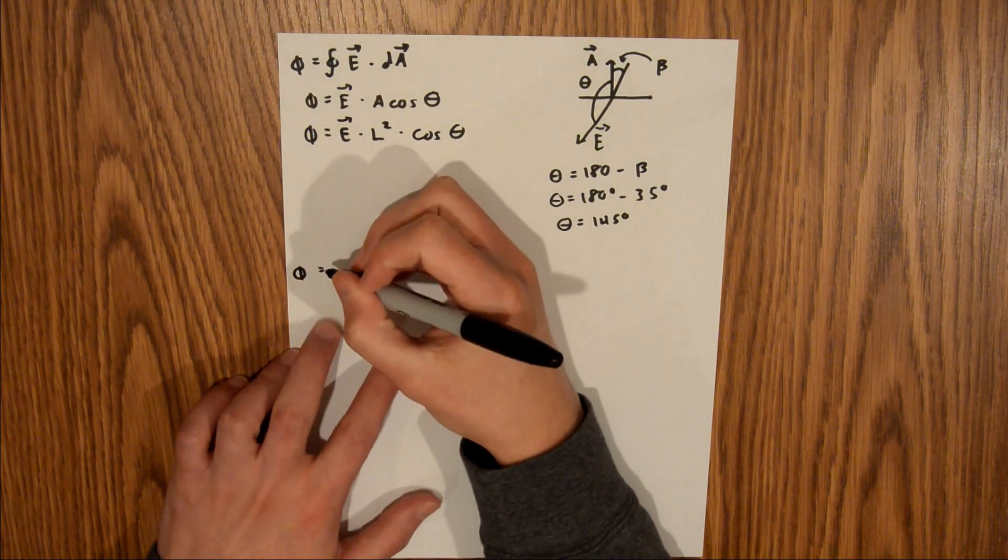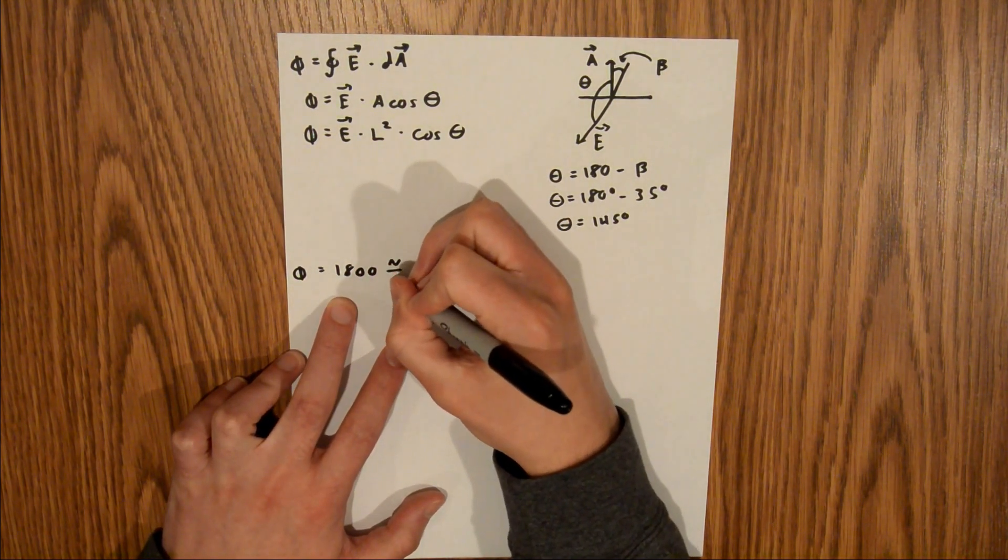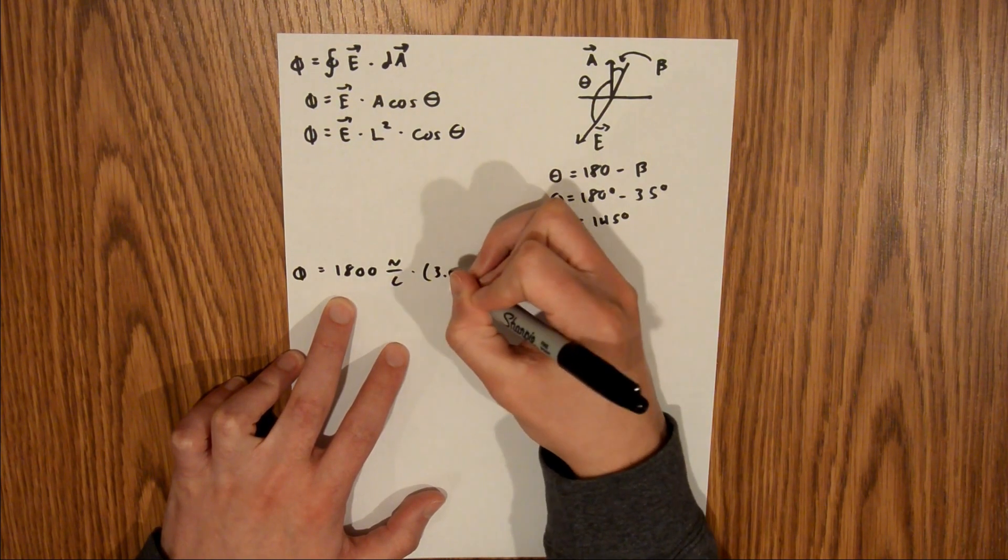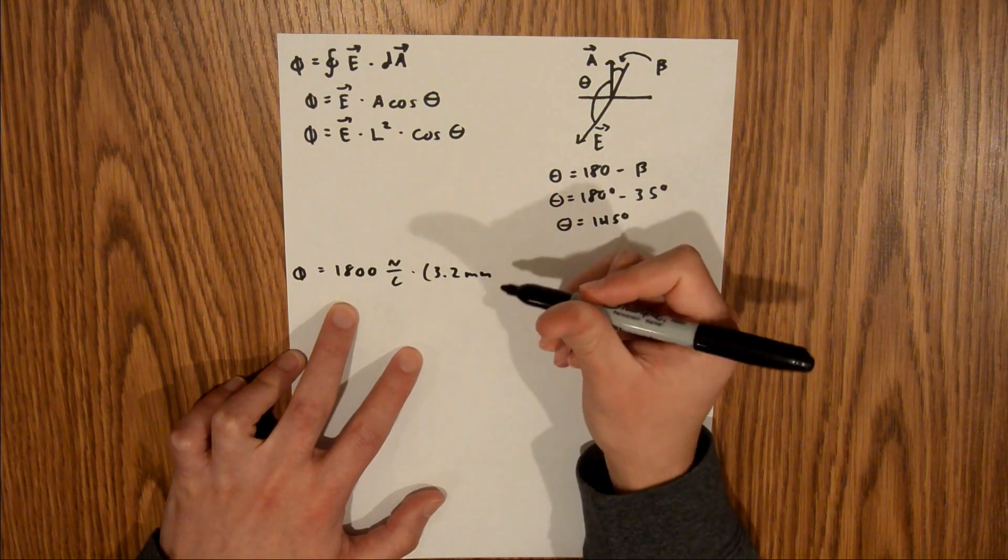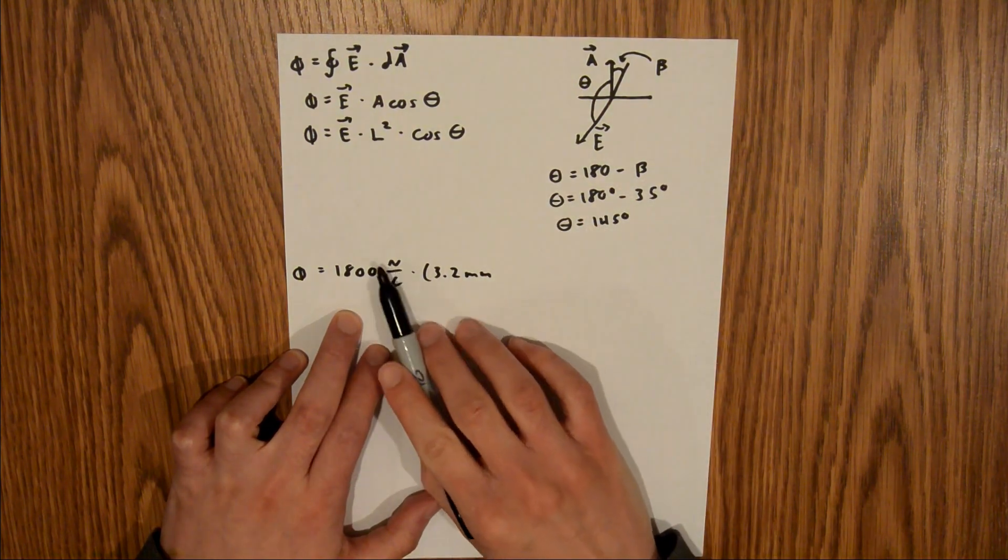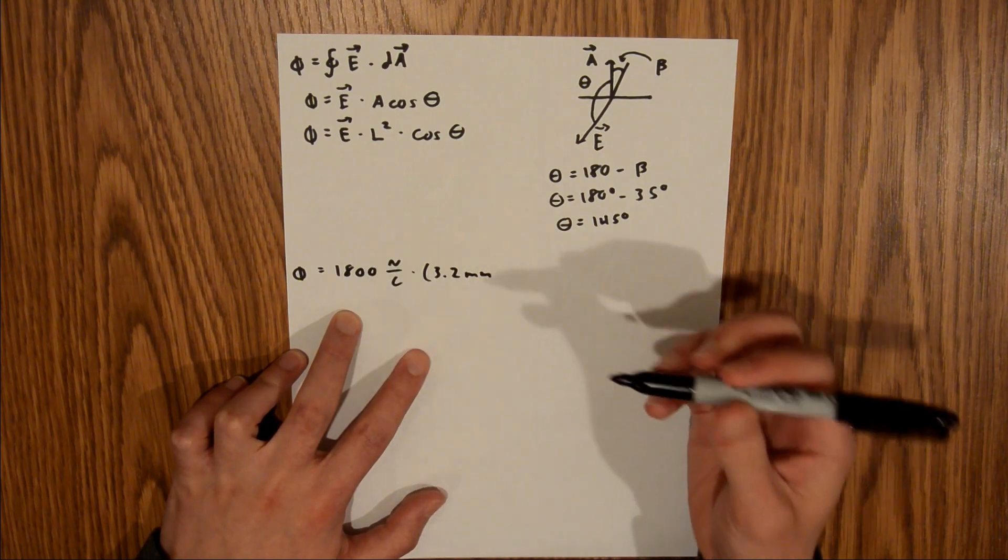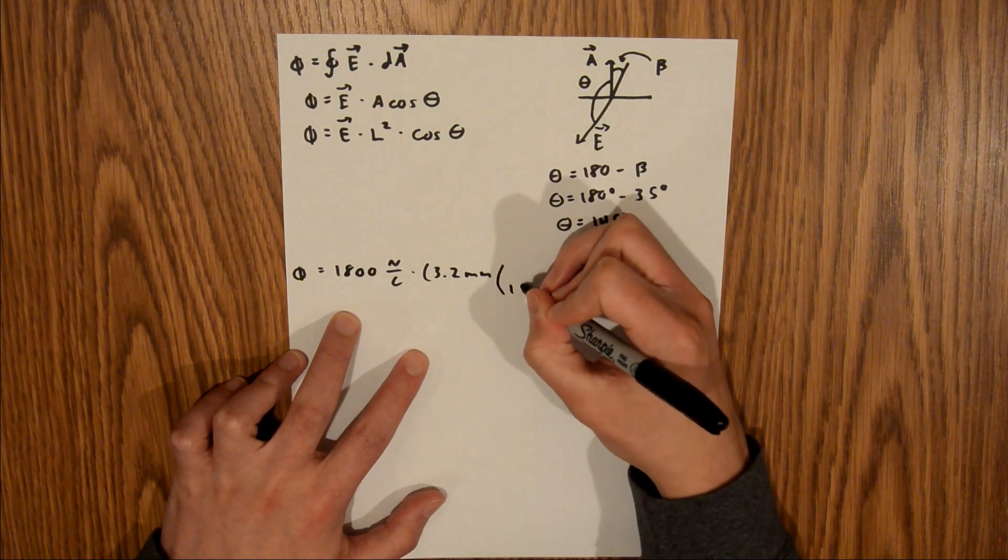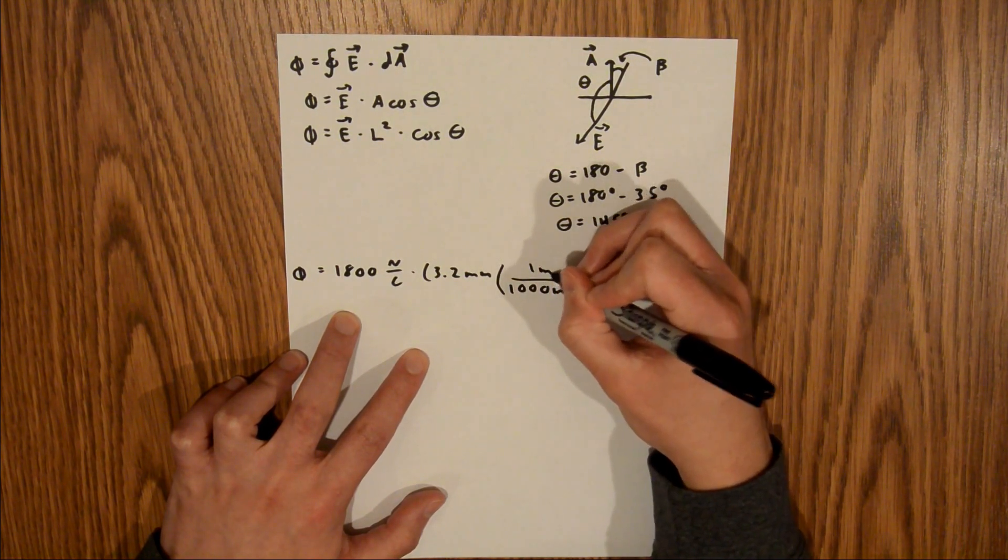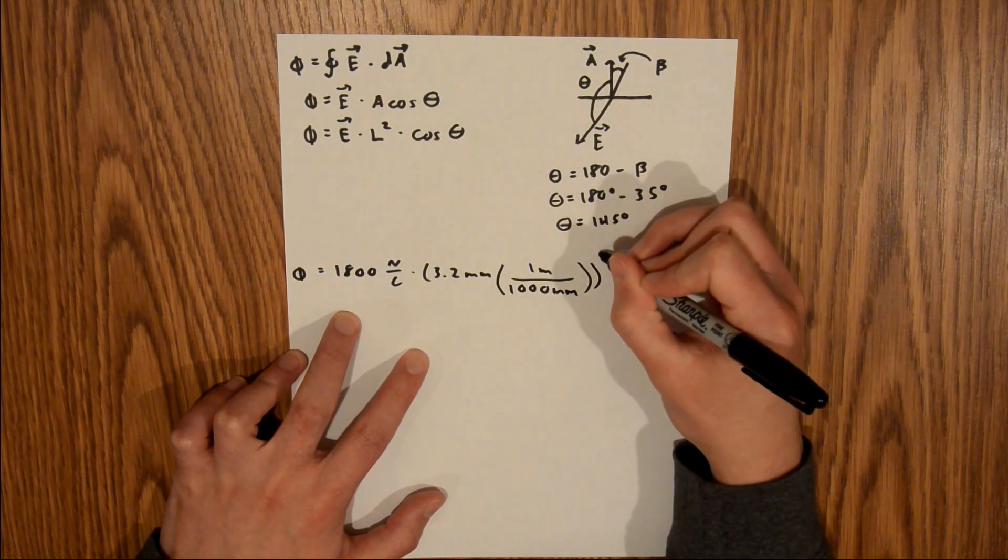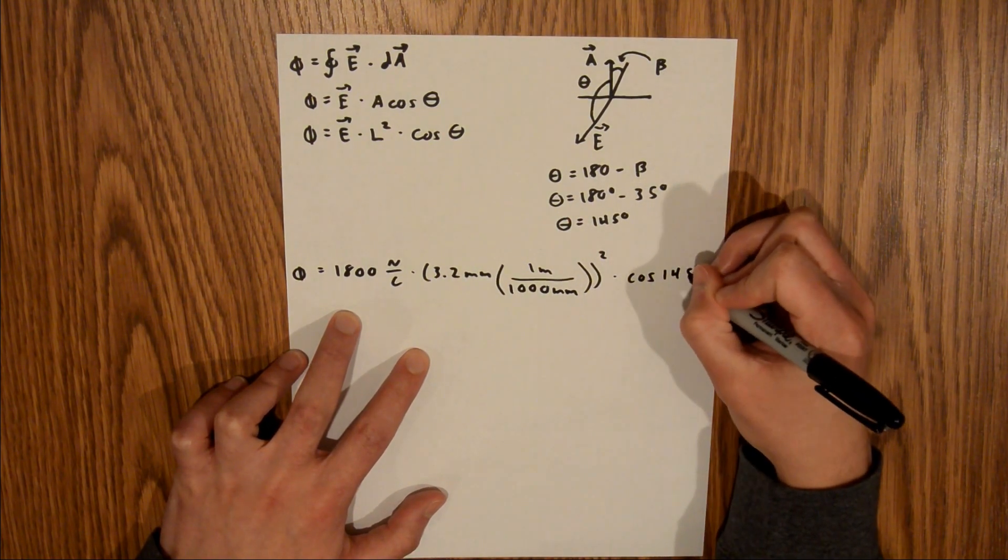Flux equals 1800 newtons per coulomb times 3.2 millimeters. That is the length we are given. The issue is the newton contains meters, and here we have millimeters. So we need to convert millimeters to meters. There are 1000 millimeters in one meter. Now we square that term and multiply by the cosine of 145.